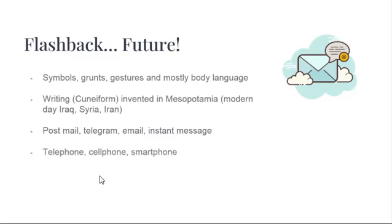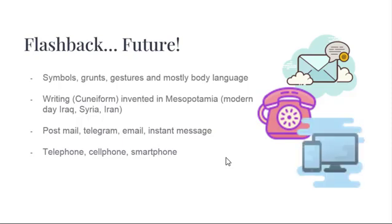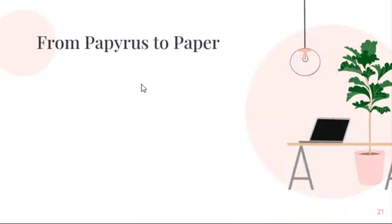Graham Bell invented the telephone, which upgraded to cellular phones, and now smartphones. There are indeed many ways to communicate nowadays. As population increased and systems of travel became available, people became more dispersed, and the way people passed on information changed as well.